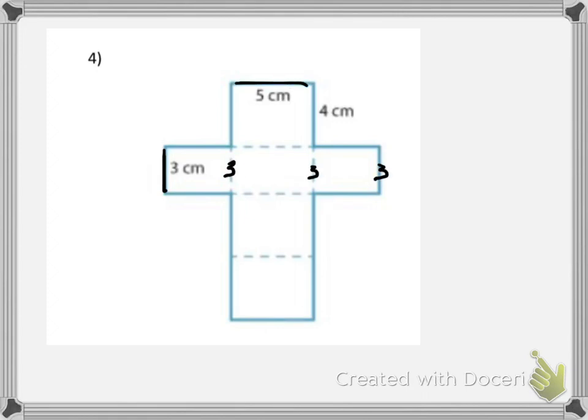I also notice the top is 5. So I'm going to bring 5 down again because opposite sides of a rectangle are equal and there are four rectangles as I go down. And then the last part here, I have a 4.